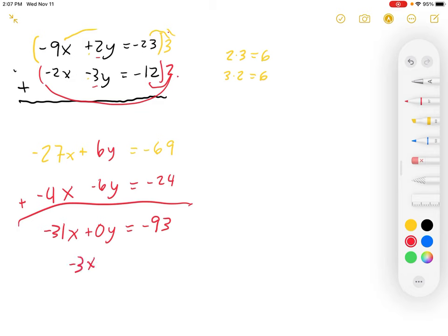So then we have negative 31x is equal to negative 93. Divide by negative 31. We get x equals 3. Good, there's one half of our answer.